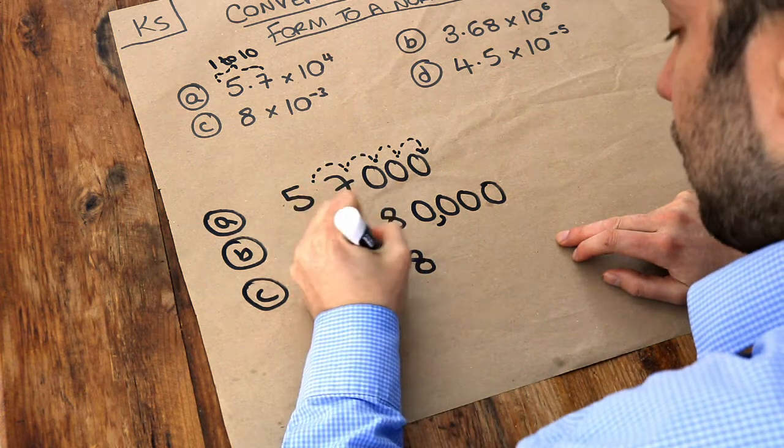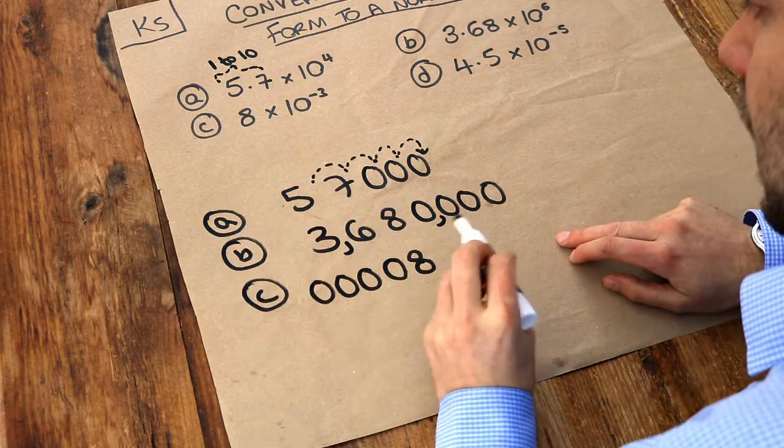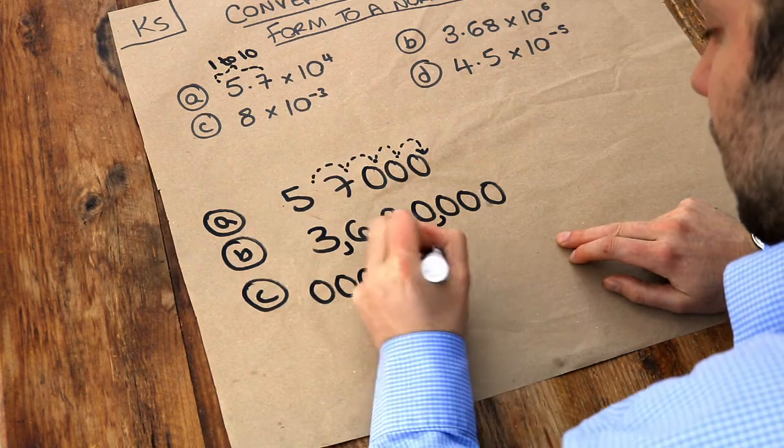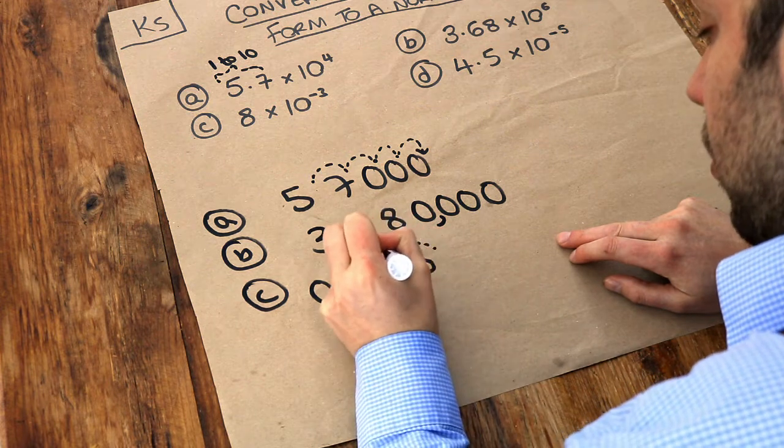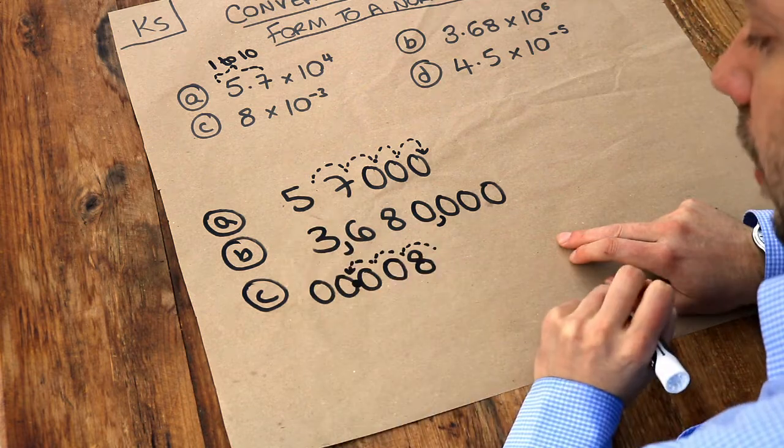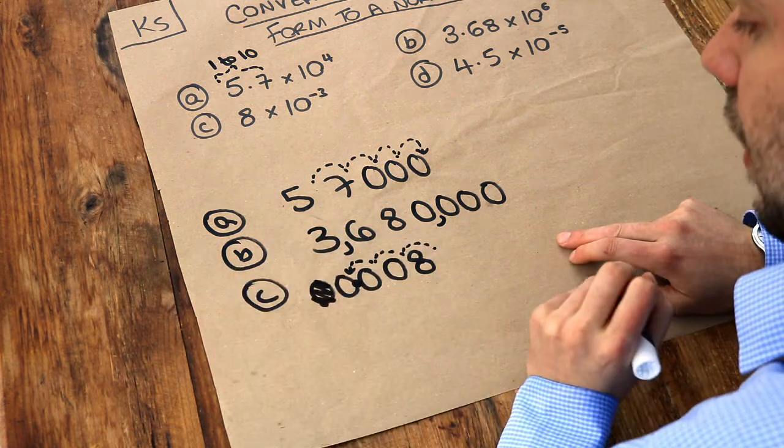Now we need to add a few zeros to the front. And then let's move this decimal point from here 3 places to the left. So 1, 2, 3. And it's going to be 0.008. And we didn't need that zero at the front there. So that is the final answer there.